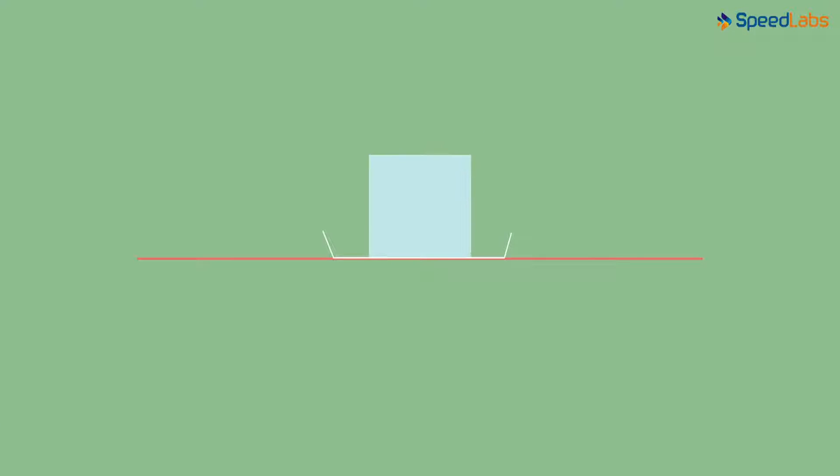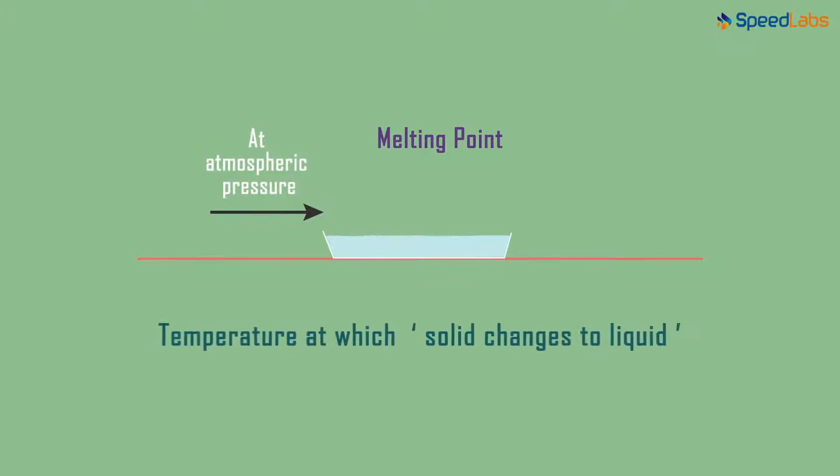The temperature at which the solid changes to liquid at atmospheric pressure is called the melting point. It's easy. Temperature at which solid changes to liquid at atmospheric pressure. But let's understand it in simple terms. The melting point indicates the strength of the force of attraction between its particles.